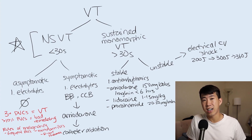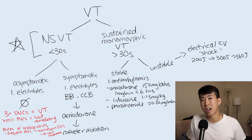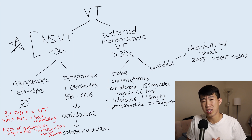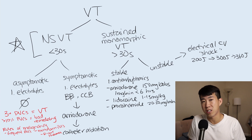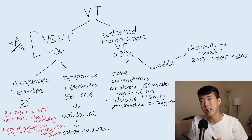Other antiarrhythmic options include lidocaine at 1 to 1.5 milligrams per kilogram, which causes the least hypotension and may benefit MI patients, but only fully reverses VT about 10 to 20% of the time. Procainamide at 20 to 50 milligrams per minute reverses VT about 50% of the time, and even when it doesn't terminate VT, it slows the rate down. In general, most people should just start with amiodarone as the default.